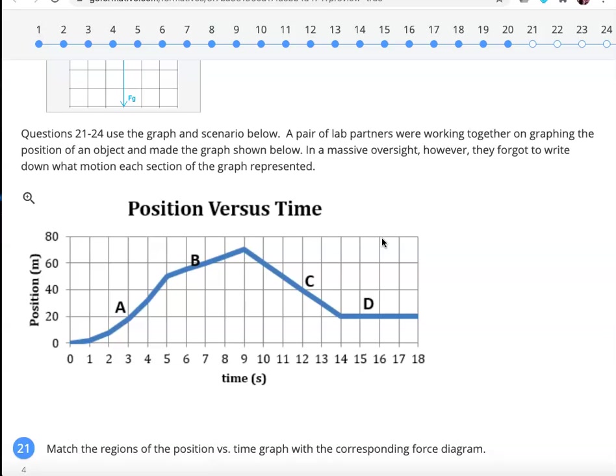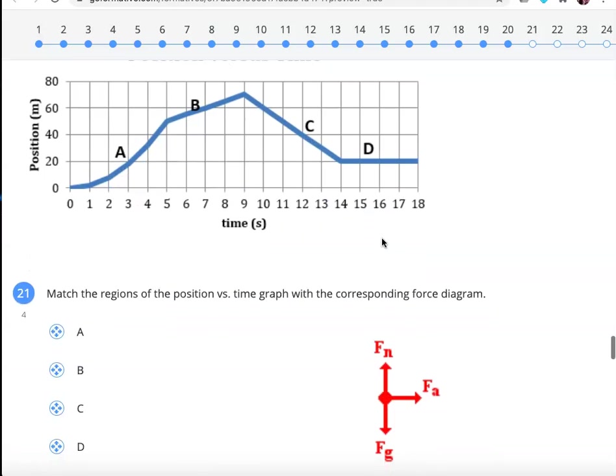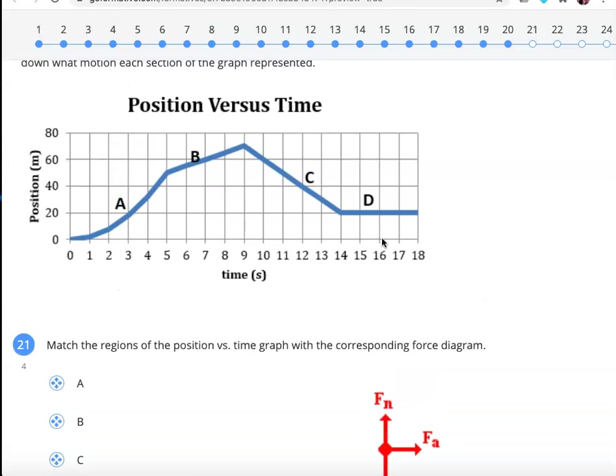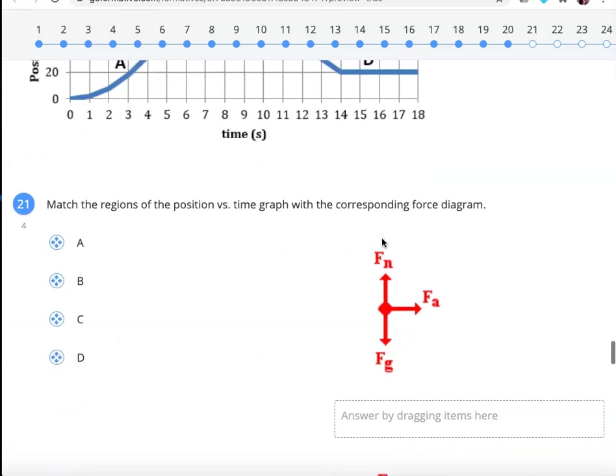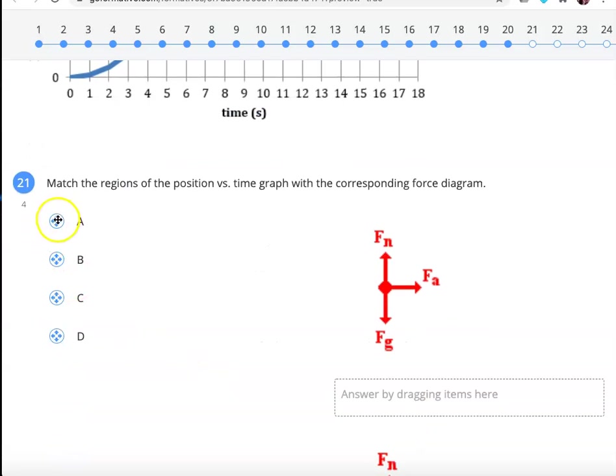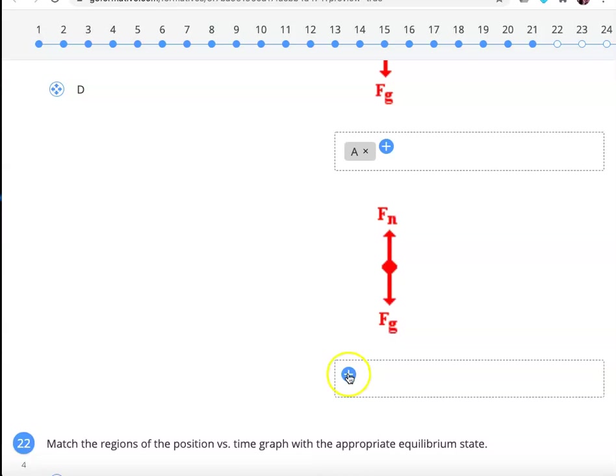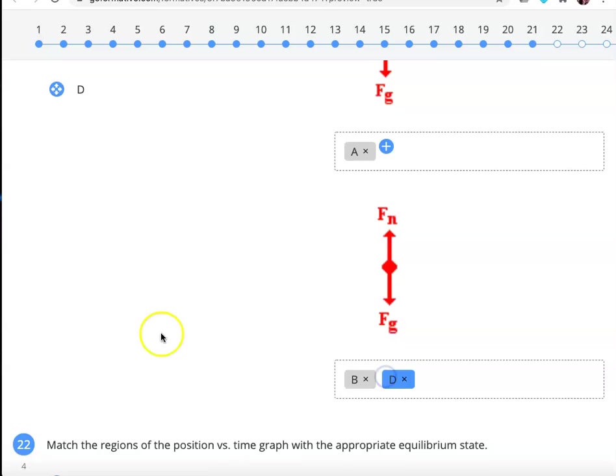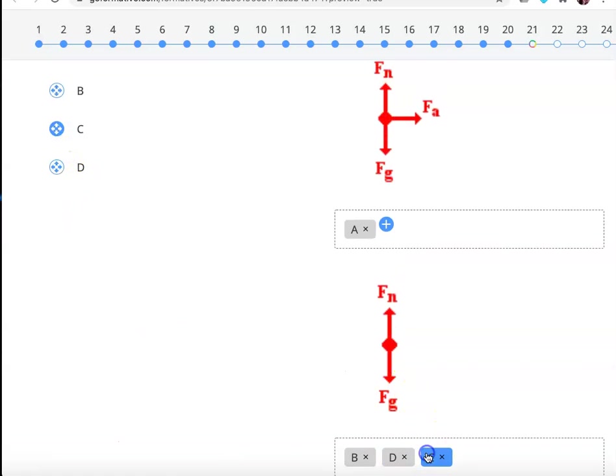Now I've got my position versus time graph problems. Notice these questions kind of go in order, vaguely go in order for what we did for the unit. And we ended the unit with graphs. So position versus time, we're matching graphs plus free body diagrams. A is accelerating to the right. I can tell because it's a curve facing upwards. So A should be here. Now you can drag and drop. But if you were having trouble moving B to here, you can click it. So in this case D, click, move here.